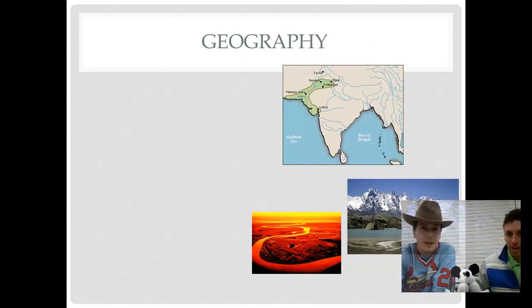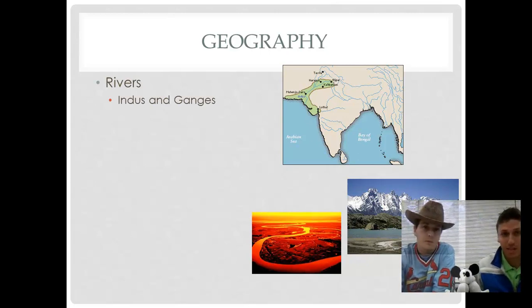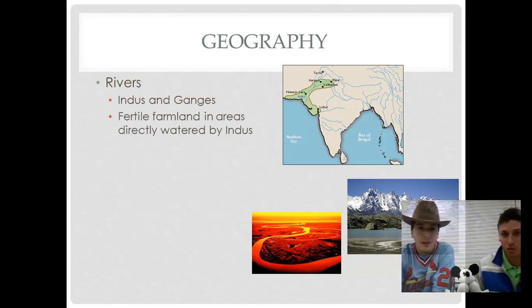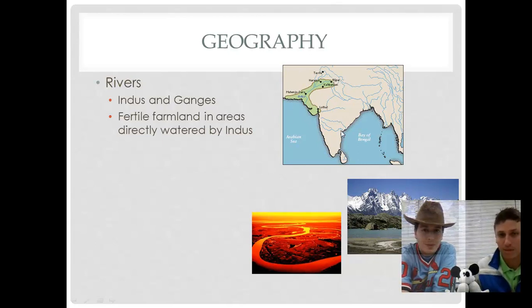First we're going to be talking about the geography, starting out with the rivers. The two rivers that were in India and very important to the civilization were the Indus and the Ganges River. What they provided was fertile soil. Whenever these rivers would flood, they would deposit silt which creates fertile soil. If you look in the top right picture you'll see the green area — that's the fertile soil it provided. And at the bottom are pictures of what the river looks like.